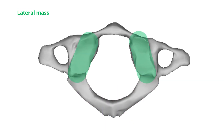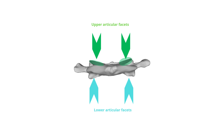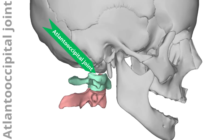Lateral mass. Between the anterior and posterior arches of the atlas, there are two lateral masses that are oval in shape. The lateral masses act to replace a vertebral body. They support the weight of the skull and are the thickest and strongest part of the atlas. There are joint facets on the upper and lower surfaces of each lateral mass. The kidney-shaped upper articular facets articulate with the occipital condyles of the skull to form the atlantooccipital joint, which allows flexion and extension of the neck, as well as slight lateral bending of the head. This joint is used when the head is nodded or tilted.